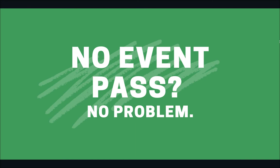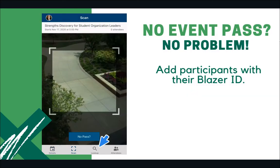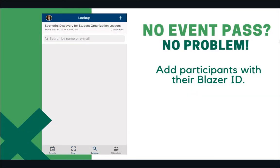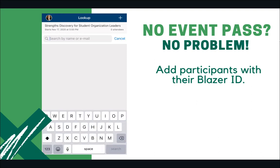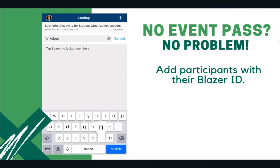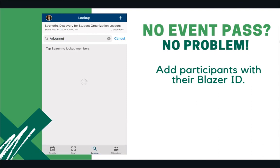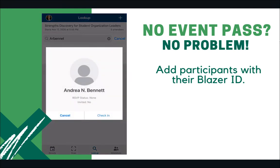If a student doesn't have an event pass, no problem. Tap Look Up from the bottom menu, search for the attendee by name or email, and when you find the right person, tap their name to confirm their check-in.